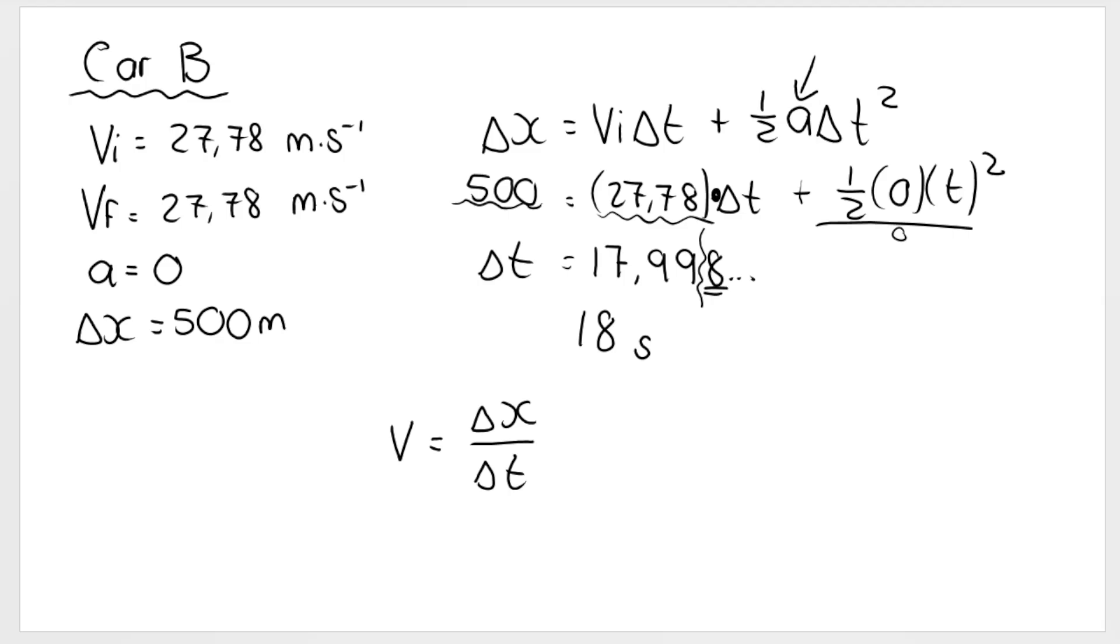Another formula that we can use is this formula. And the reason why I can use this one is because my velocity is constant. So 27.78 and then my displacement is 500 divided by time. So how you would solve for this is this and this swap places, which gets us back to the exact same answer.